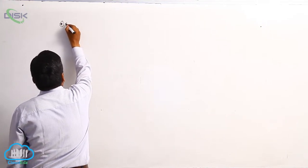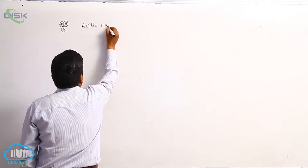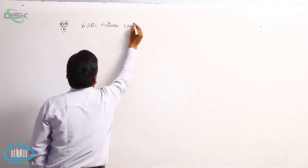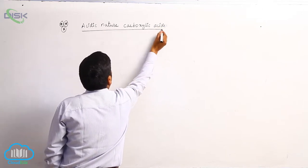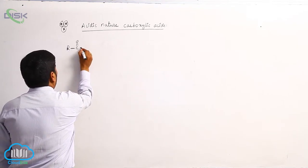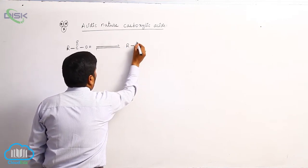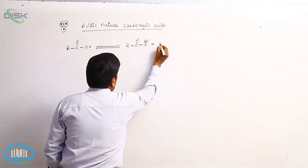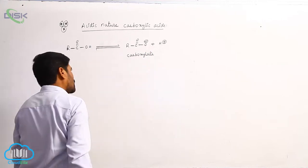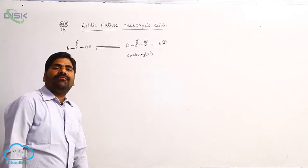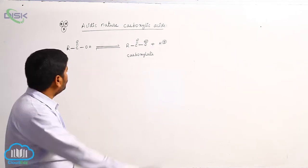Very important: the acidic nature of carboxylic acids. Carboxylic acids have the structure R-C(=O)-OH, and they convert into R-C(=O)-O⁻ and H⁺. The product R-C(=O)-O⁻ is known as the carboxylate ion. This is carboxylic acid, and the acidity of carboxylic acids is clearly explained on the basis of resonance stability.